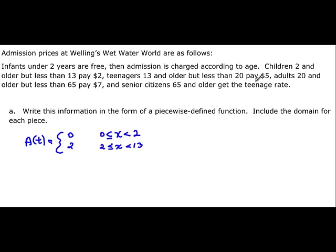Teenagers 13 and older but less than 20 pay $5. So we've got a five here and that would be including 13 up to 20 not including. Then adults 20 and older but less than 65. It's going to be $7. So that's our 20 inclusive and then less than 65.